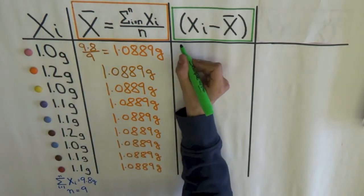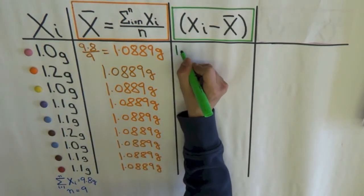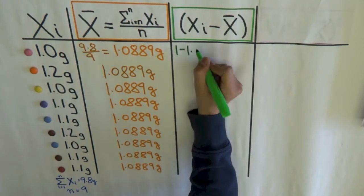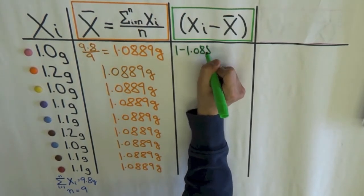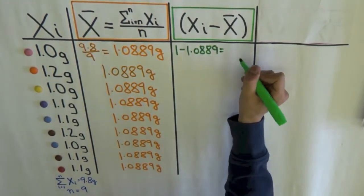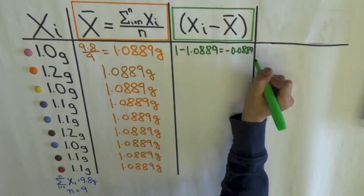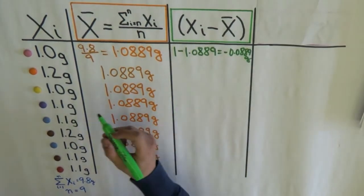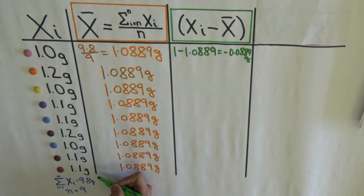So, for my first smarty, I can subtract 1 by 1.0889 and that gives me... Similarly, I can calculate the difference for the remaining smarties.